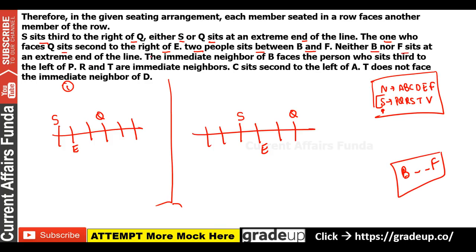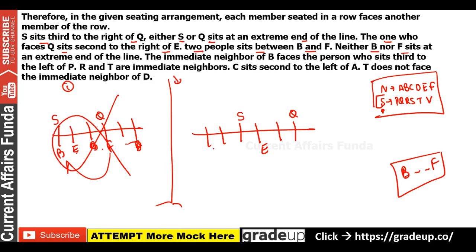B and F are not at extreme ends, and two persons sit between them. In the first diagram, if you place B at a position, F comes two seats over — but that puts one of them at the extreme, which is not allowed. In the second diagram, placing B and F accordingly works. Then: the immediate neighbor of B faces the person who sits third to the left of P.